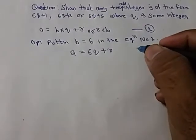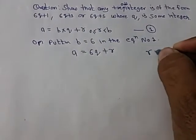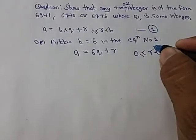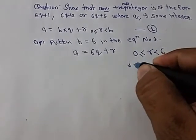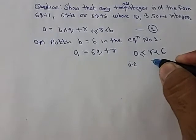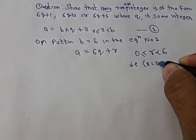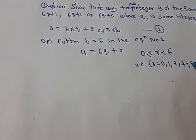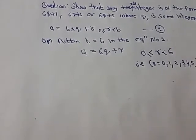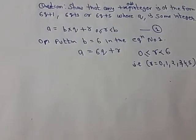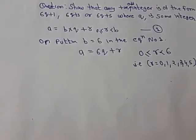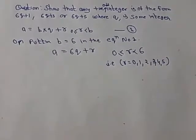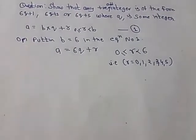So a equals 6q plus r, and r is less than b, meaning less than 6, and greater than or equal to 0. This means r will run from r equal to 0, 1, 2, 3, 4, 5. So for values of r from 0 to 5, the remainder r will take those values.